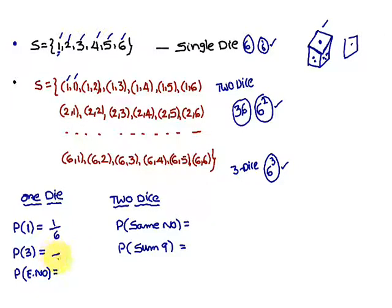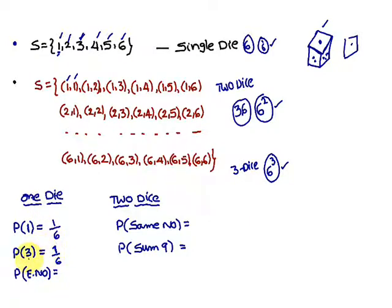Probability of getting number three: the total elements in the sample space is six, out of which three is this one — that is nothing but one event is favorable. That is nothing but one by six. The number of events favorable to getting number three is only one, so again you are going to get one by six. In the same way, probability of getting five is one by six, six is one by six, four is one by six, three is one by six, two is one by six, and probability of getting number one is also one by six.